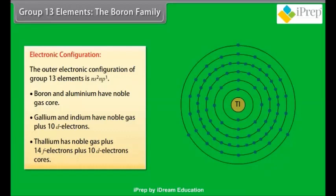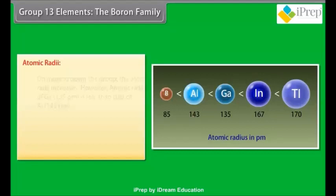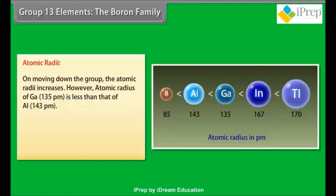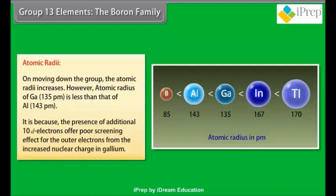Boron and aluminum have noble gas core. Gallium and indium have noble gas plus 10D electrons. Thallium has noble gas plus 14F electrons plus 10D electrons cores. Atomic radii: on moving down the group, the atomic radii increases. However, atomic radius of gallium (135 picometers) is less than that of aluminum (143 picometers). It is because the presence of additional 10D electrons offer poor screening effect for the outer electrons from the increased nuclear charge in gallium.